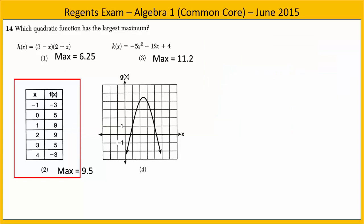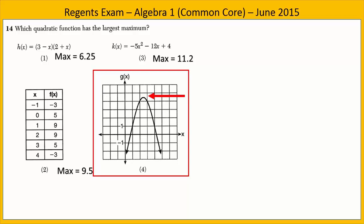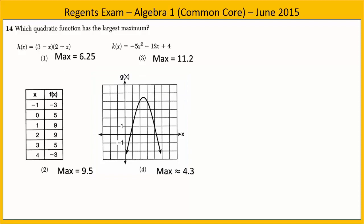For choice 4, a graph is given and the maximum appears to be approximately 4.3. Comparing all four maxima — 6.25, 11.2, 9.5, and 4.3 — choice 3 has the largest maximum at 11.2. So choice 3 is our answer.